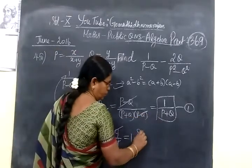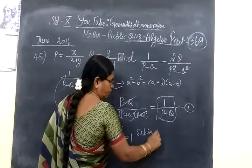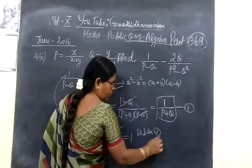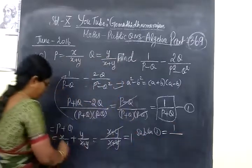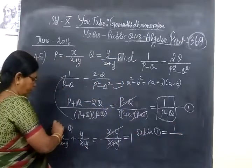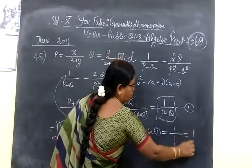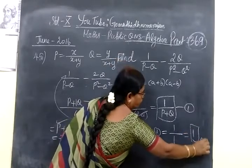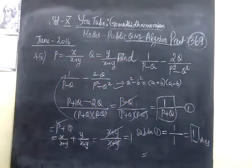So that is equal to 1. Now you can substitute this value — substitute in 1. The answer is 1. So this is a very simple sum. Do one more sum.